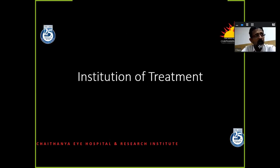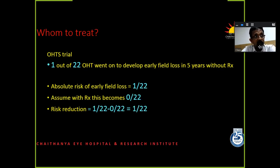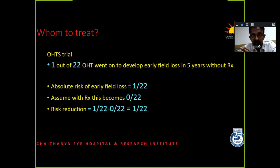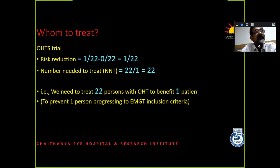How do we institute treatment? Whom do we treat is the first question. If you look at the OHTS trial, 1 in 22 ocular hypertensives with no field effects developed early field effects in 5 years. Let's assume treatment reduces this to zero — the absolute risk reduction is 1/22. What we essentially say is that if we treat 22 people with ocular hypertension, 1% benefits in the form of not getting any field effect at all. So the number needed to treat to get 1 benefit is 22.